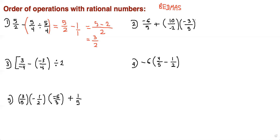Now let's go to this one. We have to do the multiplication first, because multiplication comes before addition. So we just rewrite the negative 6 over 5, and then plus. I'm going to reduce: 5 goes into itself once, goes into 10 twice, and this 2 and 2 reduce, giving me 1 and 1.